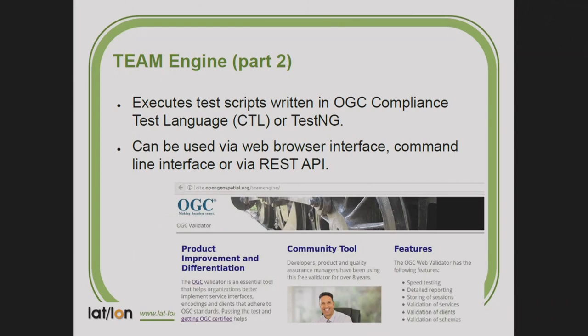Team Engine is the engine to execute tests, but not the tests themselves — tests have to be written separately. There are two languages to write tests: the OGC Compliance Test Language (CTL) and TestNG. CTL is a little outdated, so all new test suites are written with TestNG. There's a web browser interface, a command line interface, and a REST API to execute tests.